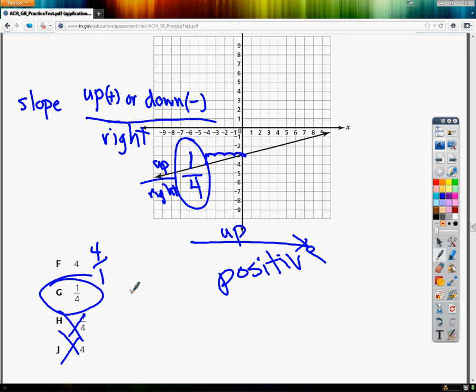Also, if you know anything about slopes, numbers with fractions where one is on the top are generally not very steep. They're kind of a shallow ascent or descent. So, in this case, one over four seems like a reasonable answer to me.